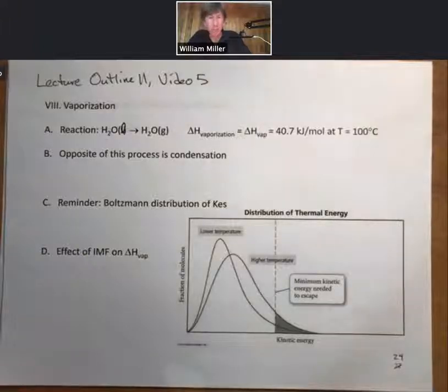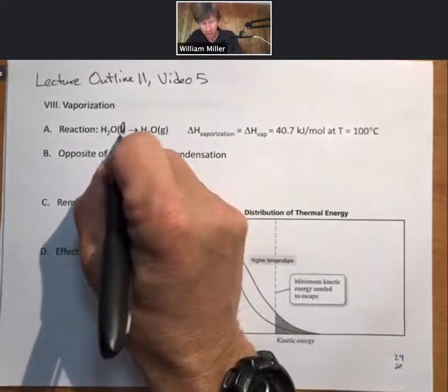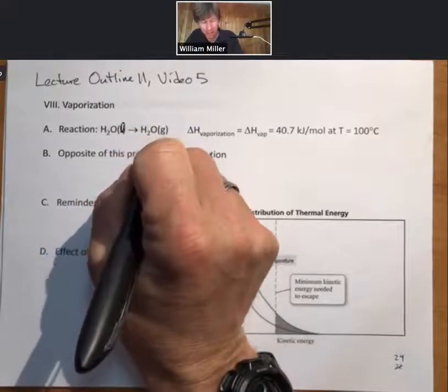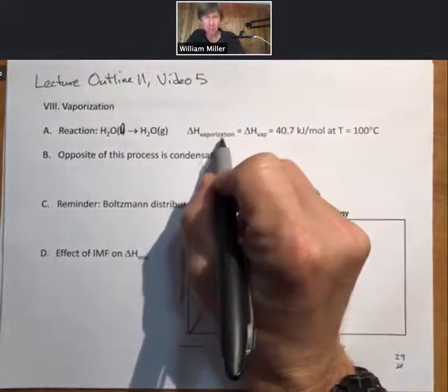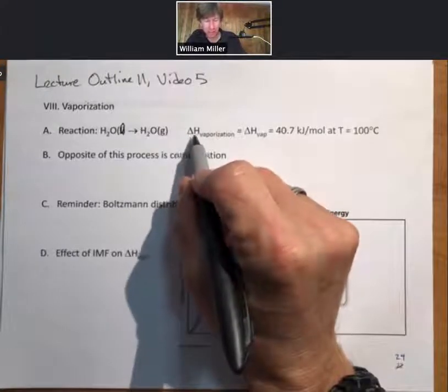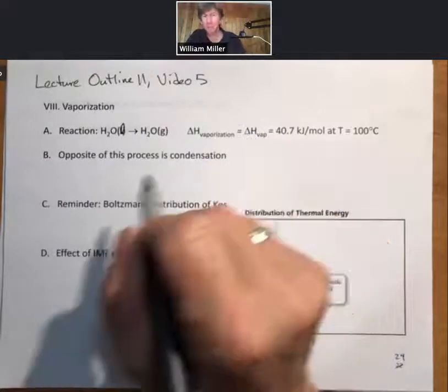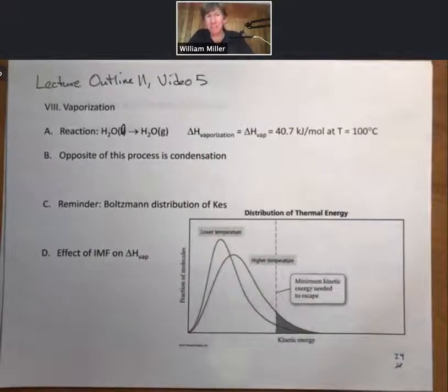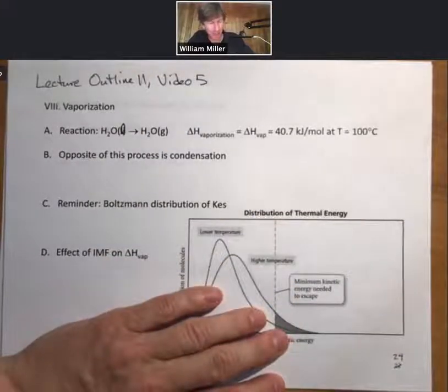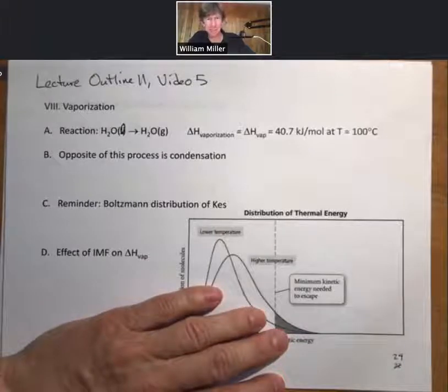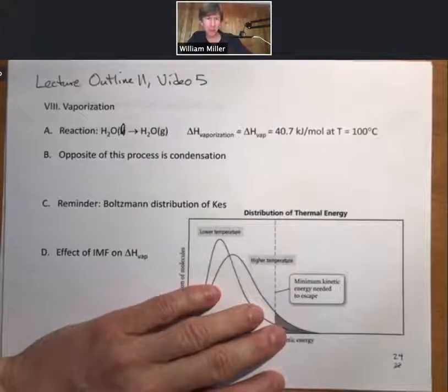In video number five, we talk about vaporization. The vaporization reaction is taking H2O liquid going to H2O gas, and delta H of vaporization, which is the change in the heat energy or the change in the enthalpy of vaporization, abbreviated as delta H vape. We could have written it as delta H reaction, but since this is a specific reaction that we want to remember—a vaporization reaction going from liquid to gas phase—the number here is 40.7 kilojoules per mole at T equals 100 degrees Celsius. This is a number we'll use throughout the rest of the lecture outline.